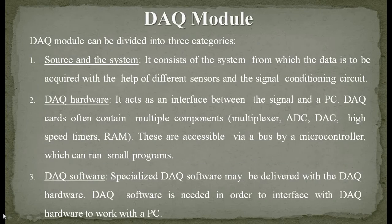A DAQ module can be divided into three categories. First is the source system, which consists of the system from which data is to be acquired using different sensors and signal conditioning circuits. The system is some physical part of the universe where changes are happening — for example, a controlled space with changes in temperature or pressure. Different sensors such as temperature sensors, pressure sensors, and flow sensors are used to capture that physical signal.